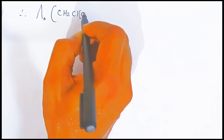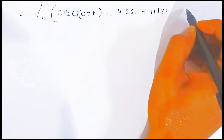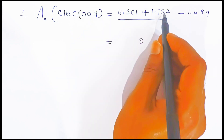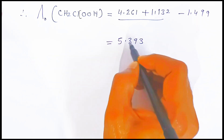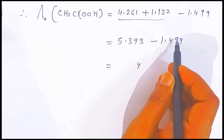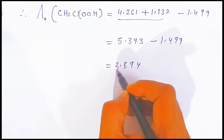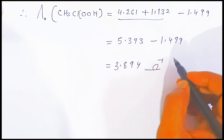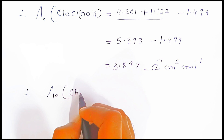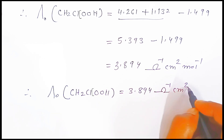Therefore, the molar conductivity of monochloroacetic acid CH₂ClCOOH equals 4.261 plus 1.132 minus 1.499. Adding 4.261 and 1.132 gives 5.393, and subtracting 1.499 from 5.393 gives us 3.894 ohm⁻¹ cm² mol⁻¹.